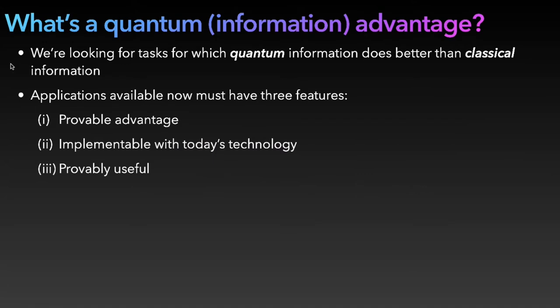Before that, let me tell you about what's a quantum information advantage. In the theory team at Candela and many theory teams in the world working on quantum information, one of the things we do is look for tasks for which using quantum information allows us to do better than using classical information. For an application to be available now, it must have three features: it must have a provable advantage over classical information, be implementable with today's technology, and be probably useful.